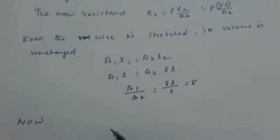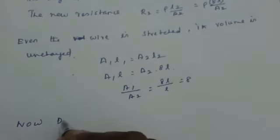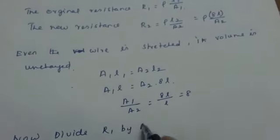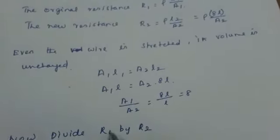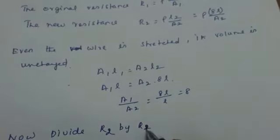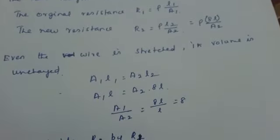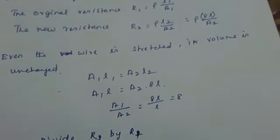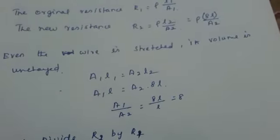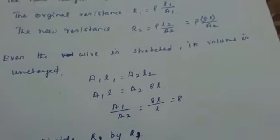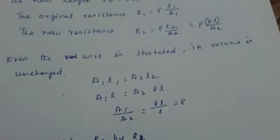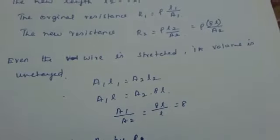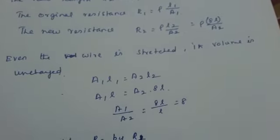Now, I am going to divide R2 by R1. R2 by R1. So what is the value for R2? R2 by R1 is equal to rho into 8L by A2 divided by rho into L by A1. Rho and rho will get cancelled. L and L will get cancelled.